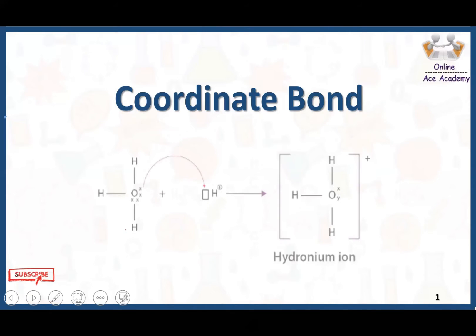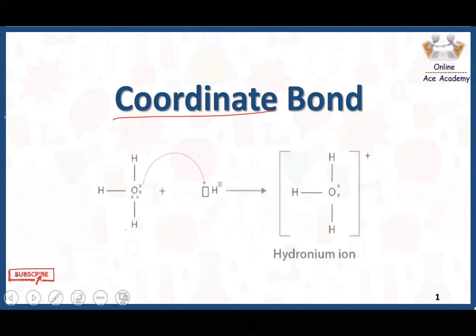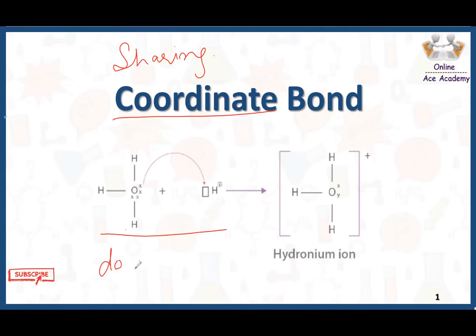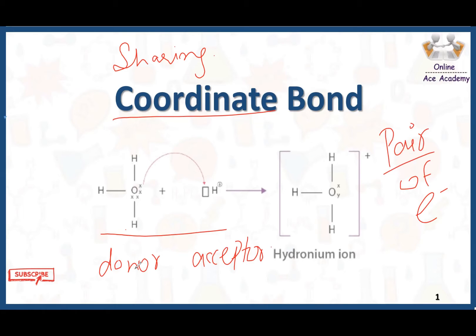In today's video we are talking about coordinate bond. In coordinate bond there is sharing of electrons. Coordinate bond is formed between two atoms. In coordinate bond, one atom acts as a donor atom and the other atom acts as an acceptor atom. The donor atom shares a pair of electrons with the acceptor atom, and as a result a bond is formed, called the coordinate bond.